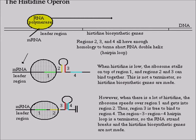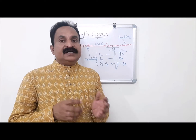When histidine is low, the ribosome stalls on top of region 1, and regions 2 and 3 can bind together. This is not a terminator, so histidine biosynthetic genes are made. However, when there is a lot of histidine, the ribosome speeds over region 1 and gets into region 2. Thus, region 3 is free to bind to region 4. The region 3 and region 4 hairpin loop is a terminator, so the RNA strand breaks and the histidine biosynthetic genes are not made.